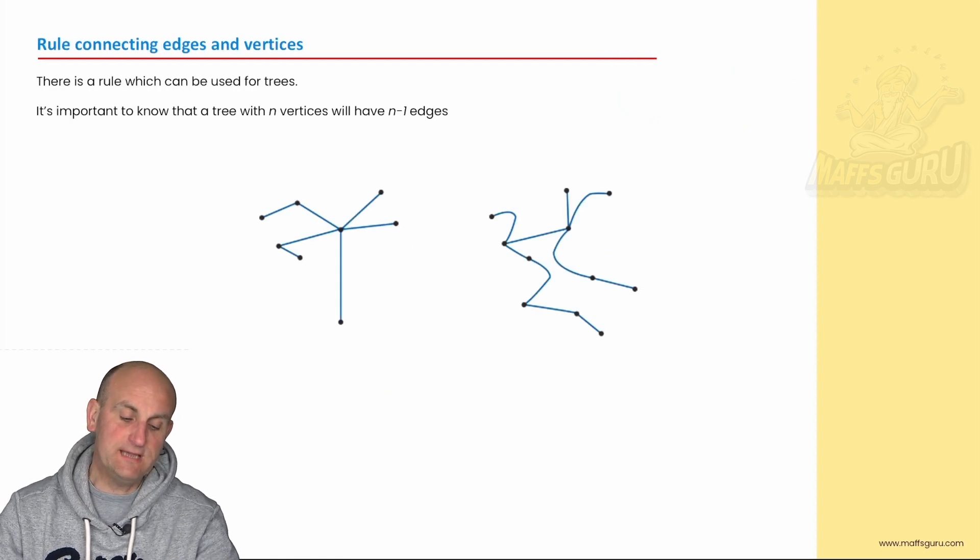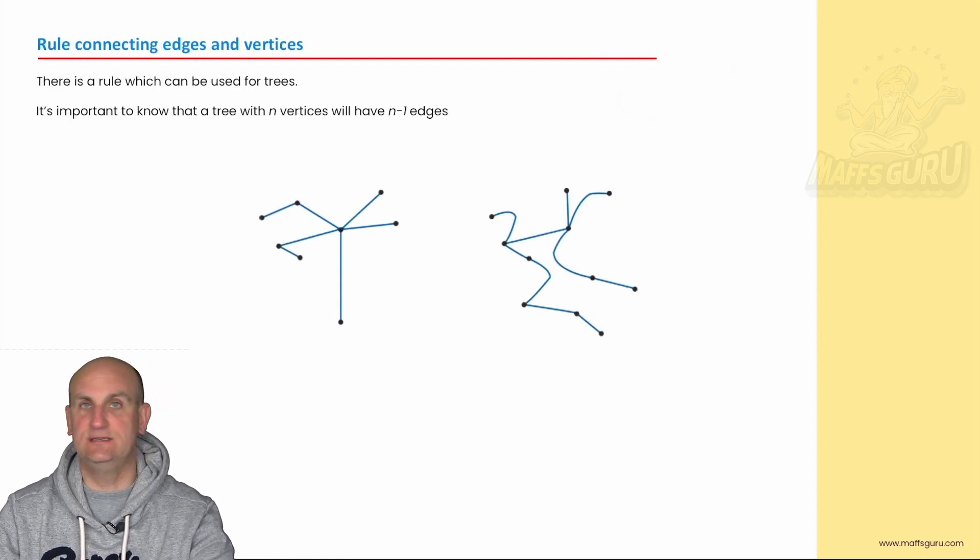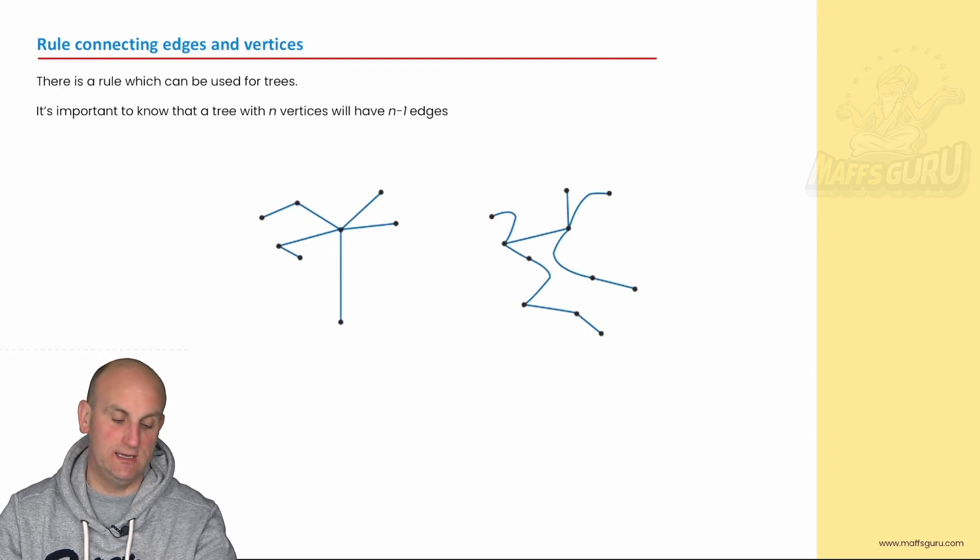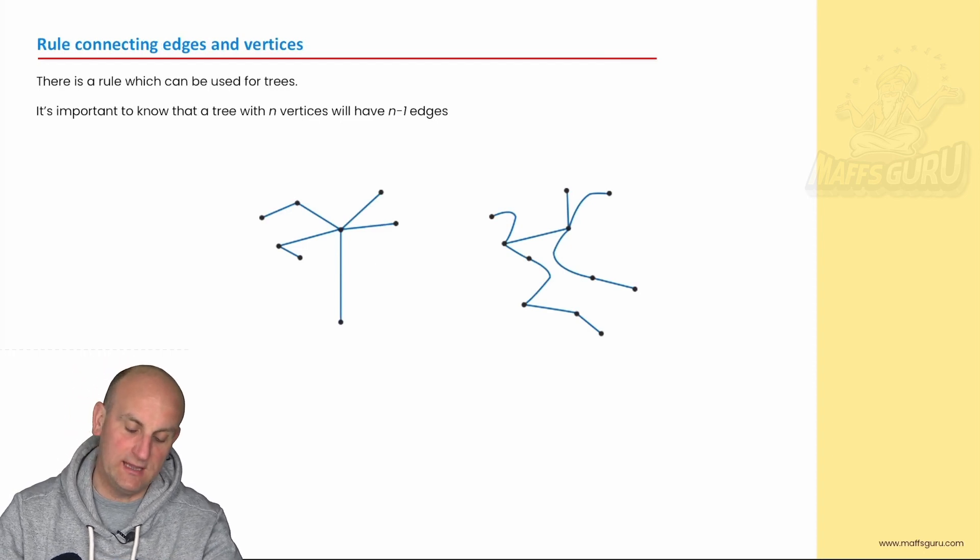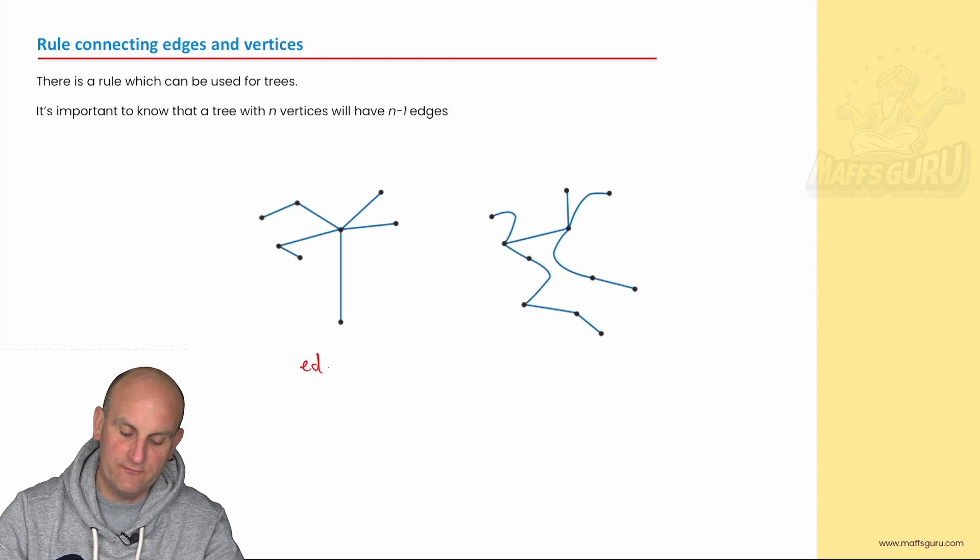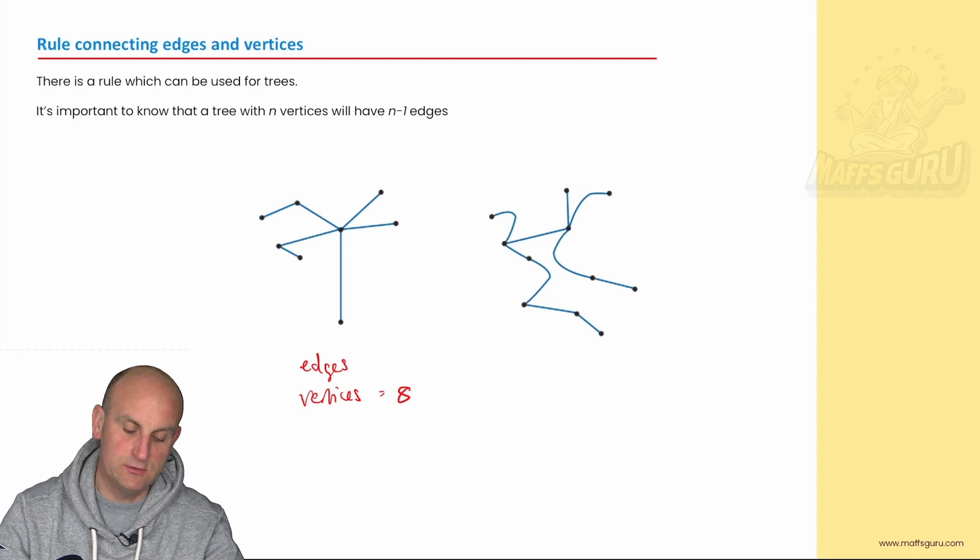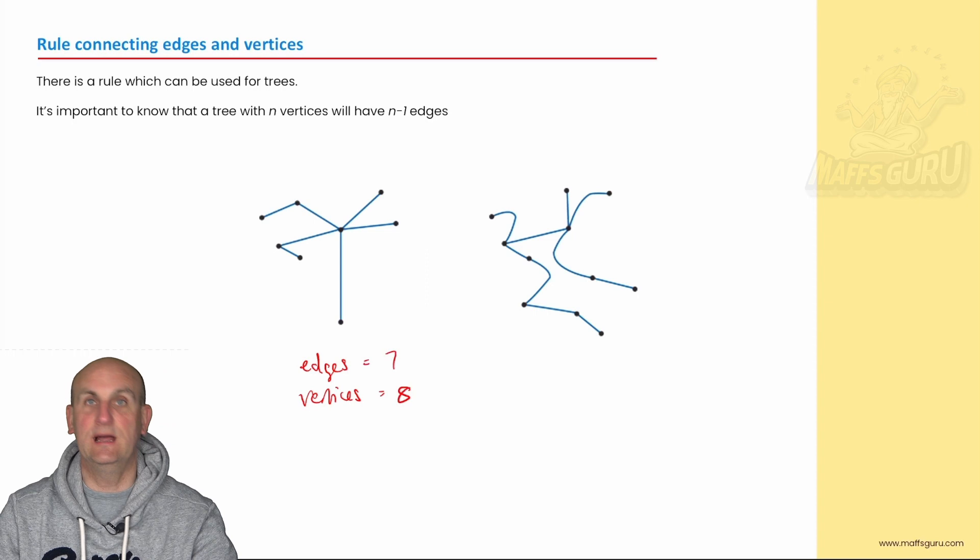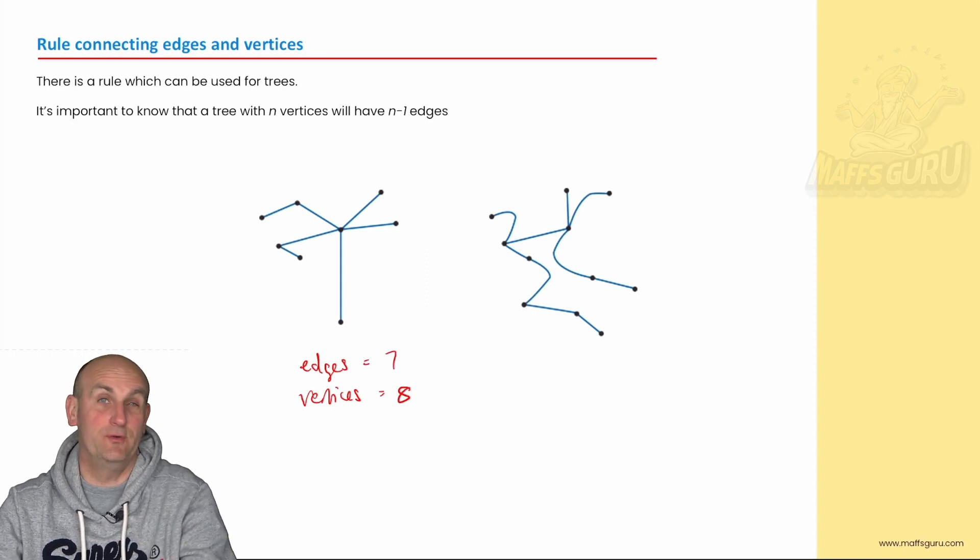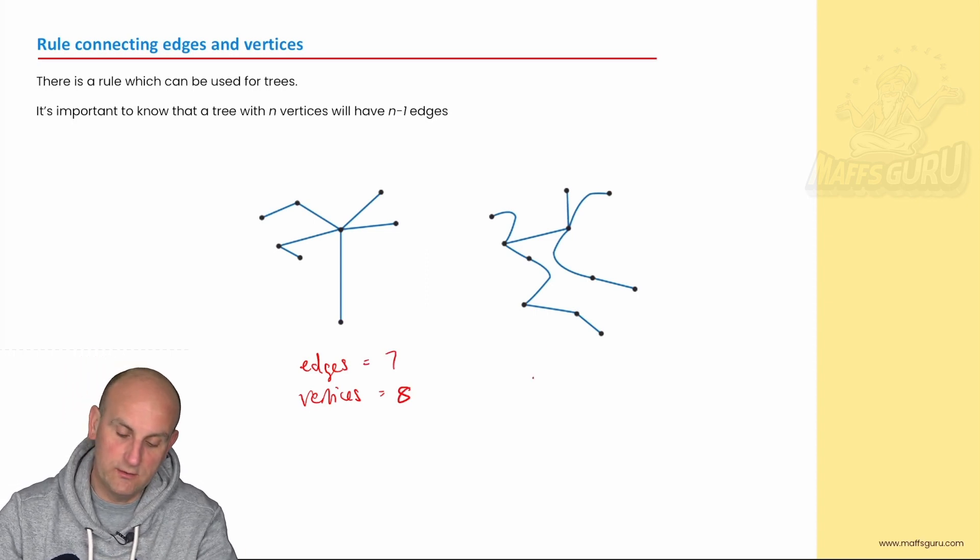Now there is a rule connecting edges and vertices in a tree. And so if you have a look here, how many edges do I have and how many vertices do I have? So let's see, one, two, three, four, five, Australian, one, two, three, four, five, six, seven, eight vertices. How many edges are there? One, two, three, four, five, six, seven edges. Interesting.